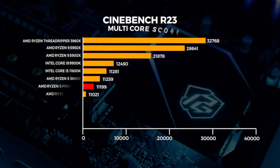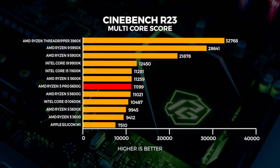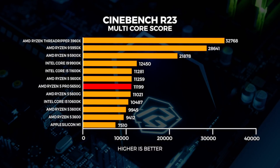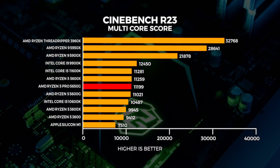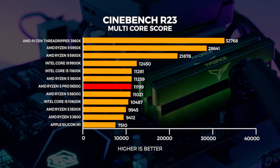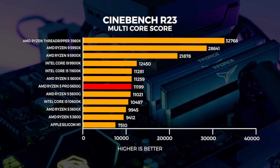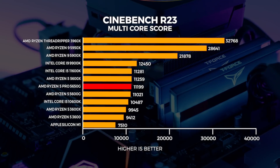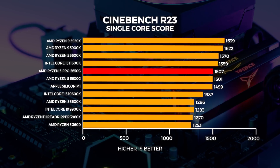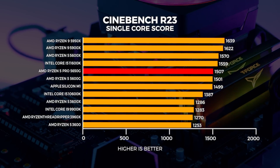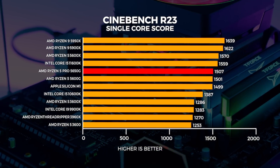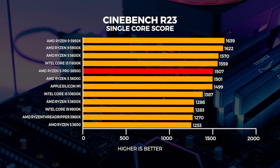Let's start with Cinebench performance. We tested with Cinebench R23 only, using historical data collected when R23 came out. From our testing in both multi-core and single-core performance, it's pretty clear that both the 5650G and the 5600G are not the fastest chips on the market. However, the 5650G is faster than the 5600G. I'm not quite sure why, considering they appear identical on paper, but I'm going to put this down to silicon quality.